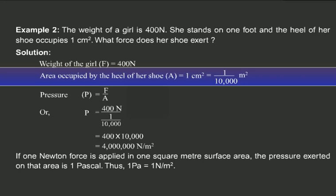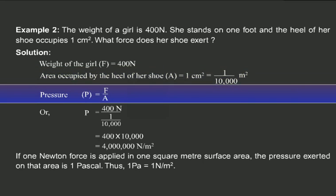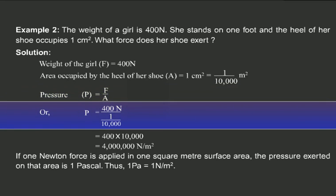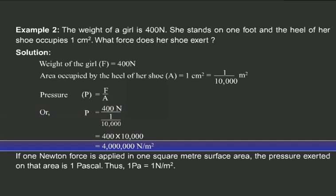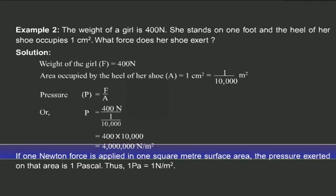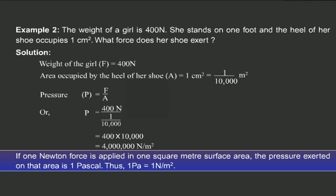Now, let us use the relation: pressure is equal to force by area. We have the values of force and area, so let us substitute them. P is equal to 400 Newton by 1 by 10,000, which gives us 400 into 10,000, or 4,000,000 Newton per meter square. If 1 Newton force is applied over 1 square meter, the pressure exerted is 1 Pascal. Thus, 1 Pascal is equal to 1 Newton per meter square.